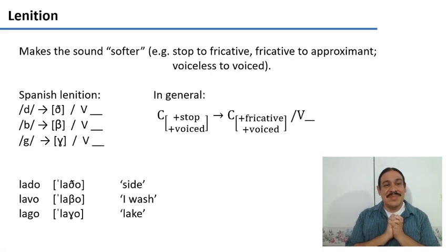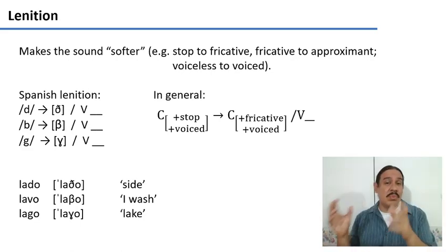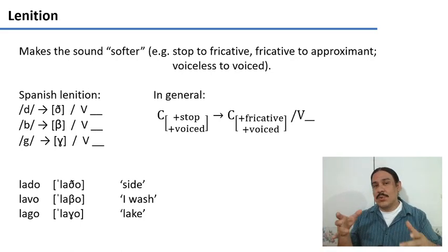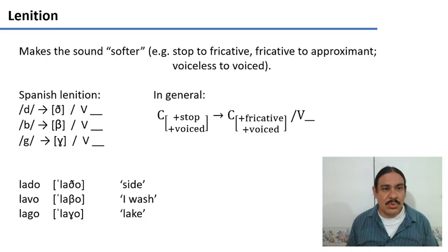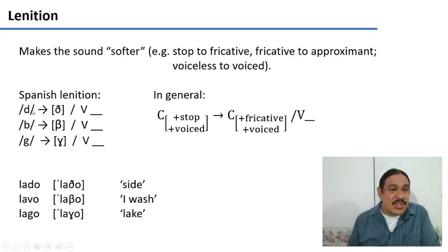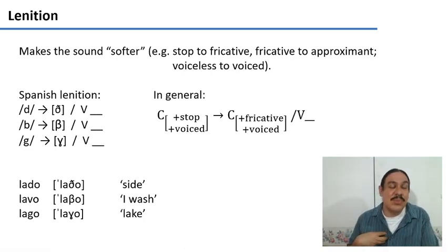Lenition. This is making a sound softer, so going into something that has more airflow, like going from stop to fricative, fricative to approximant, also going from voiceless to voiced, because voiced has a more orderly airflow because of the vibration of the vocal cords. We had the Spanish rule where we went from the stop d to the fricative ð whenever there was a vowel and a d, like in lado side. Asterisk - mine is so lenited, so soft, that it actually becomes approximant, so you're going to hear approximants when I pronounce them.